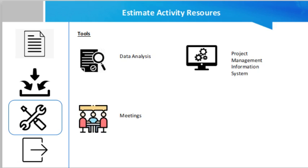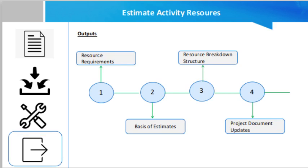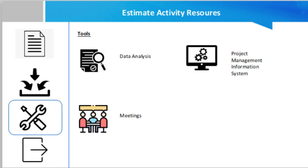Data analysis techniques used in this process include alternative analysis, to evaluate identified options in order to select the options or approaches to use to execute and perform the work of the project. Project management information system can include resource management software that can help plan, organize, and manage resource pools and develop resource estimates. Depending on the sophistication of the software, resource breakdown structure, resource availability, resource rates, and various resource calendars can be defined to assist in optimizing resource utilization.